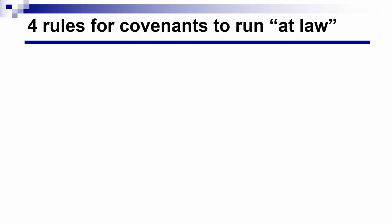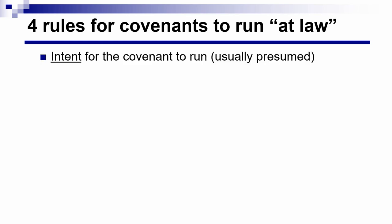There are four rules that have to be satisfied for covenants to run at law when the plaintiff wants money damages as a remedy. These rules are technical and complicated, but if we break them down, they're not hard to understand.